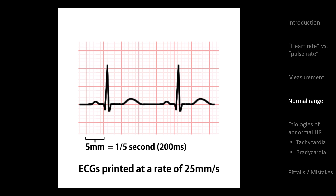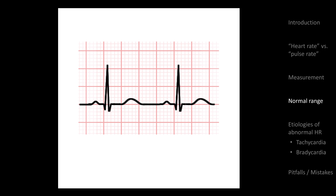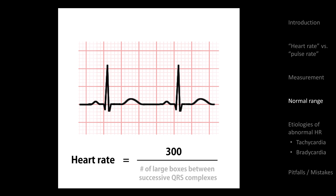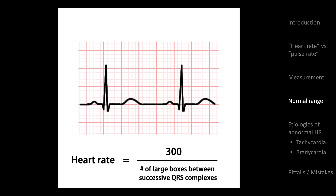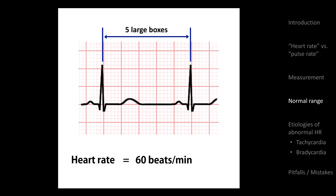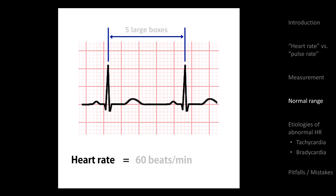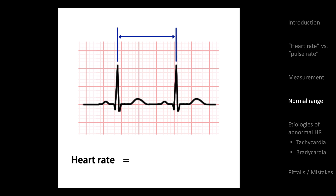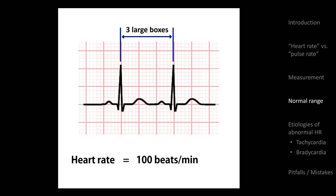These sharp deflections, known as QRS complexes, are the electrical activity that triggers ventricular contraction. Using just a bit of math, we can derive an equation to quickly estimate the heart rate as 300 divided by the number of large boxes in between QRS complexes. So if there are 5 large boxes, we have a rate of 60 beats per minute. If we have 3 large boxes, we have a rate of 100 beats per minute.